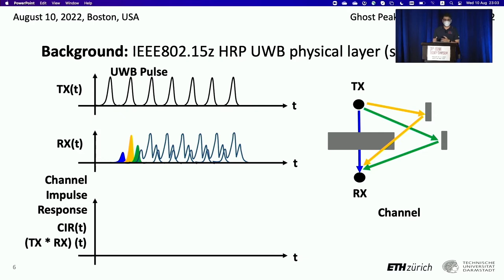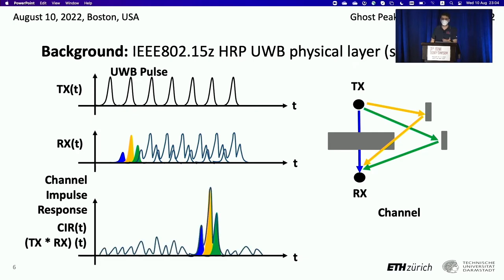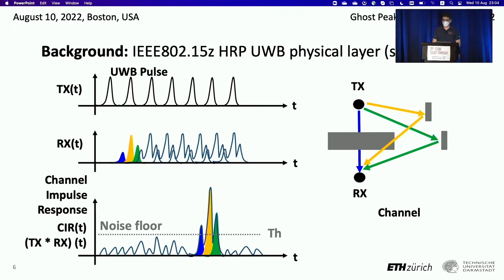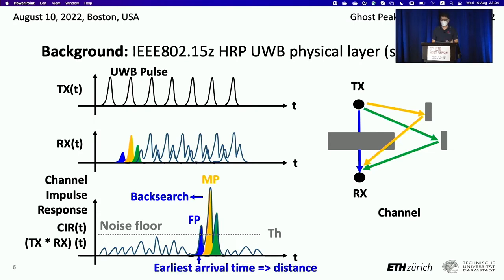The receiver wants to recover information about that blue path that tells the distance between transmitter and receiver. It does that by convoluting the transmitted signal, which is known, with the received signal to recover the channel itself. You can see that it can identify the blue, yellow, and green paths. But in this operation there is also some noise, caused by the interpulse interference — artifacts of the mathematical operations involved. So the receiver first estimates the noise floor, then looks for the highest peak, then goes back in time looking for the earliest possible peak. There it finds the blue path, and since this is the earliest arrival time, it also corresponds to the distance.